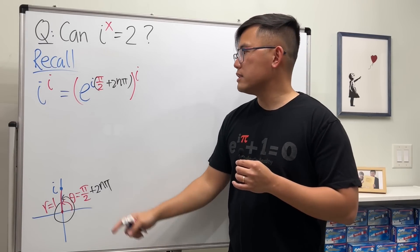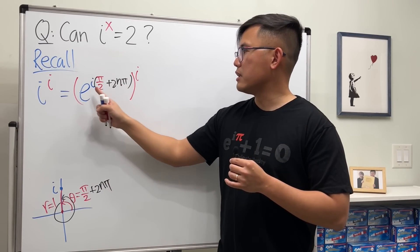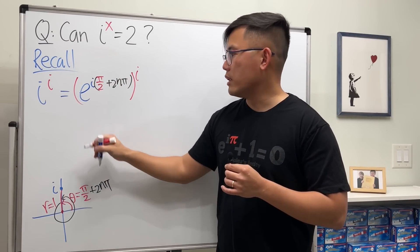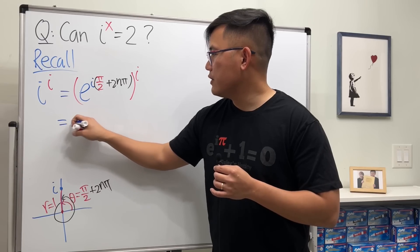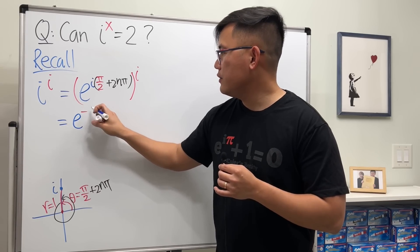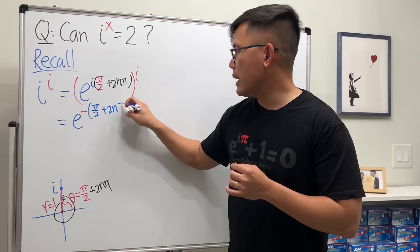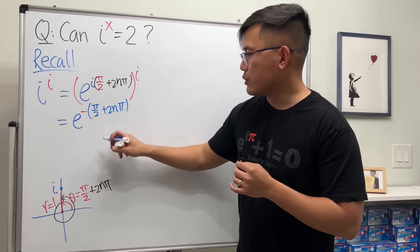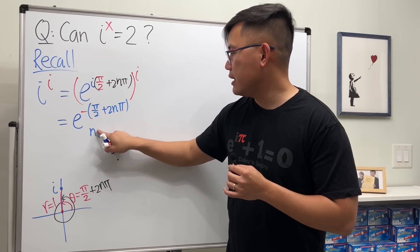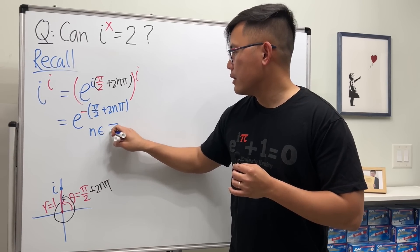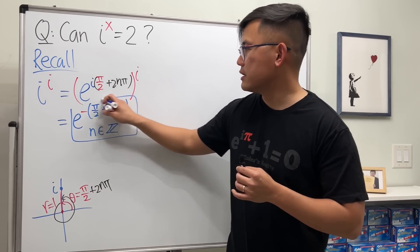Then what we can do next is just multiply this and that together. i times i is negative one, so we see this gives us e to the negative π/2 plus 2πn. And of course I should denote that n is an integer, so that's why we have infinitely many answers.